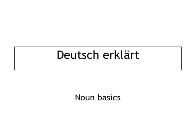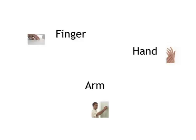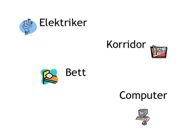Finger, Hand, Arm. No, that's not just me speaking with a German accent. These are actually German nouns. You might have already noticed how many words sound similar in German and English. Just take the nouns electrical, corridor, bet, and computer from our film scene.